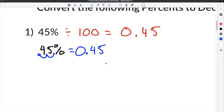You can see that the answer is the same for whichever way you complete the problem. This means that 45% is 0.45 as a decimal.